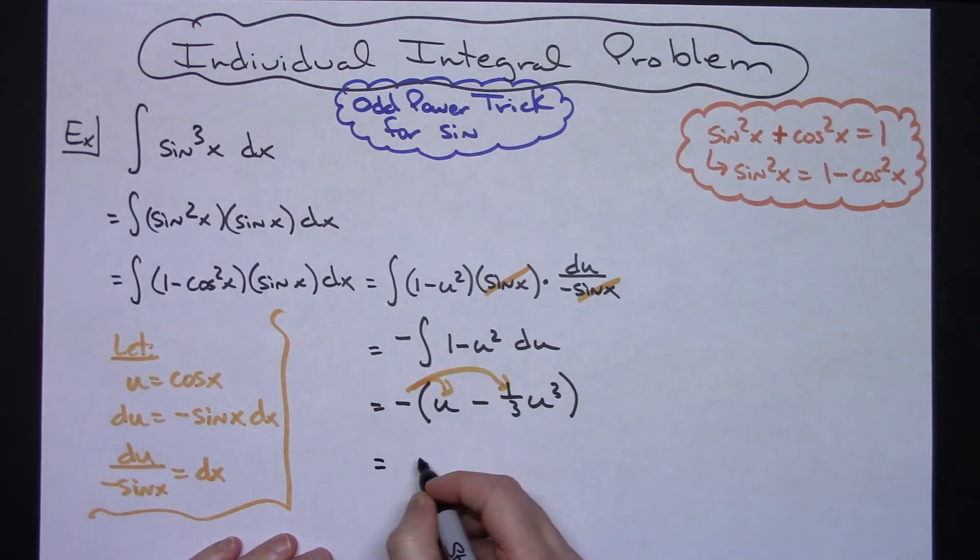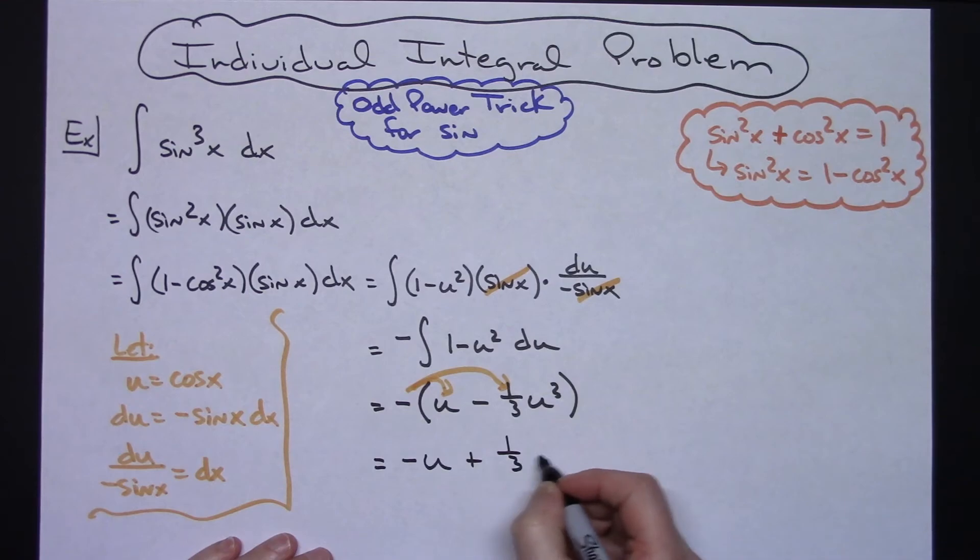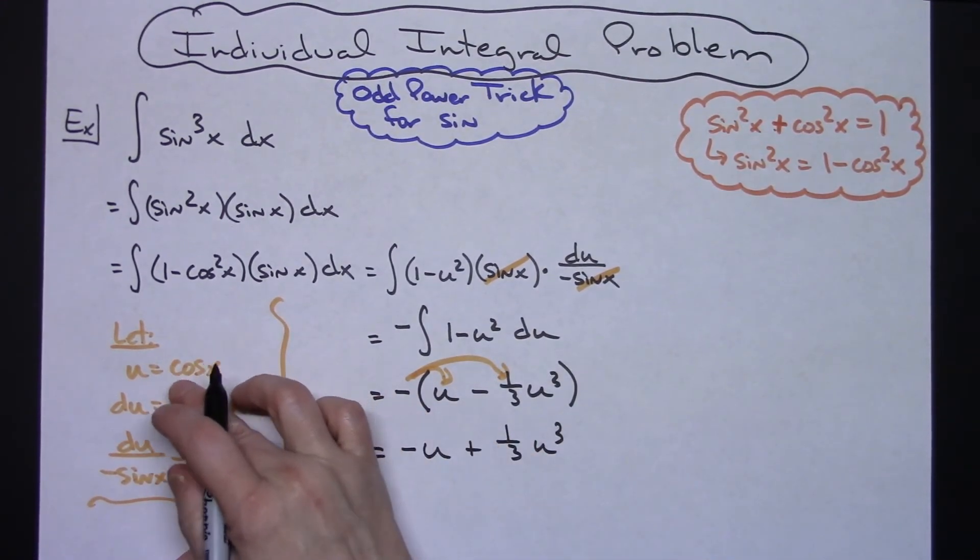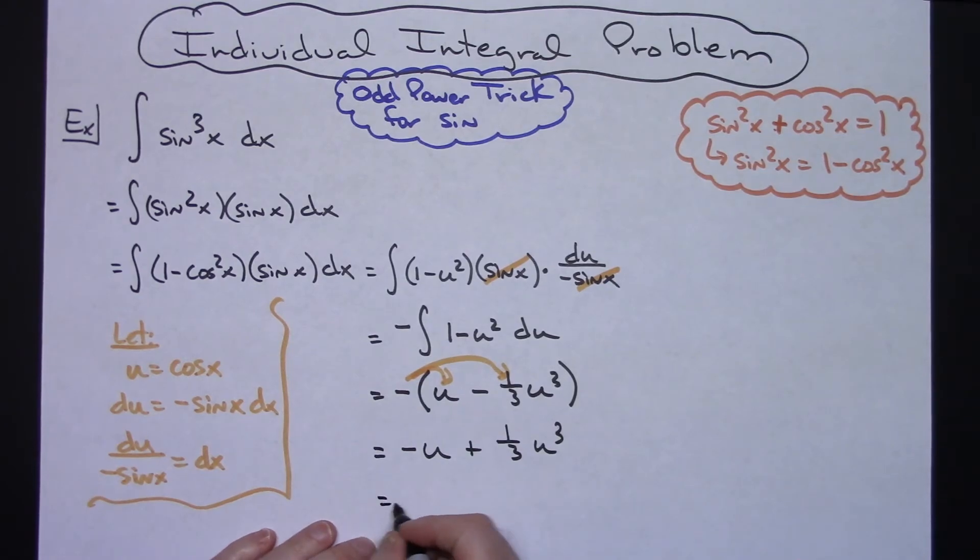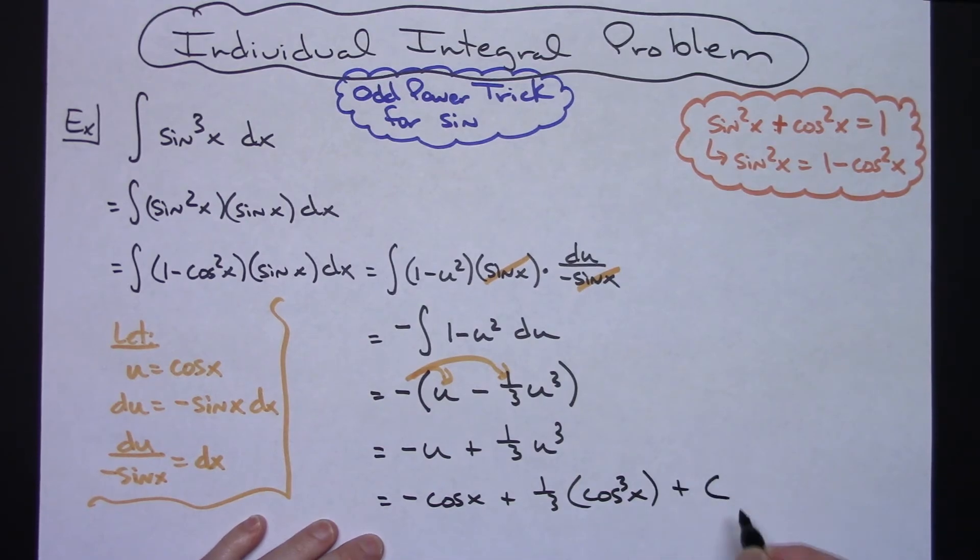So we'll have negative u plus one-third u to the third. At this point we can replace back what we said our u was. So we'll have negative cosine x plus one-third cosine to the third x, and then plus c, our final answer there.